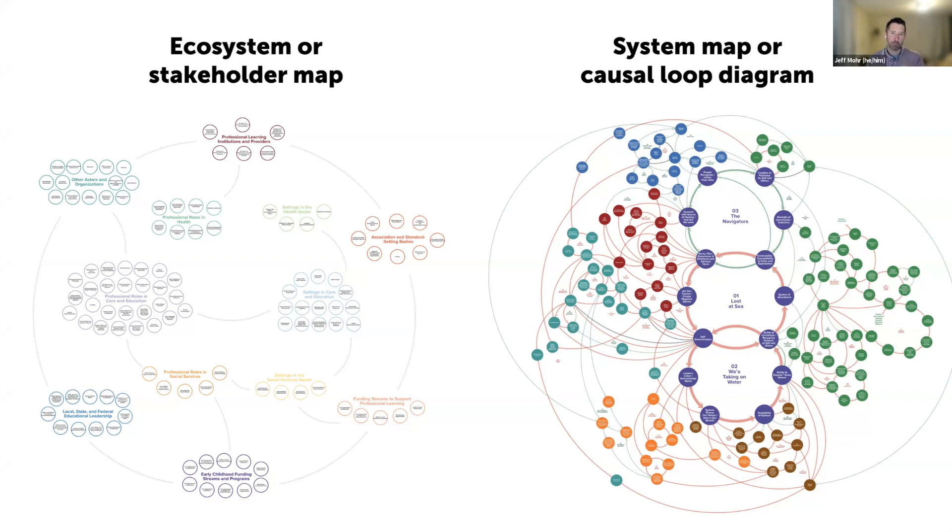Those relationships might look very different. One ecosystem map might be very focused on how do we understand the emerging collaborations and projects that are coming out in relation to the specific problem or challenge I'm facing. Some of the points on the map might be organizations and other points might be projects, and you have a web based on who are the collaborators on those projects.